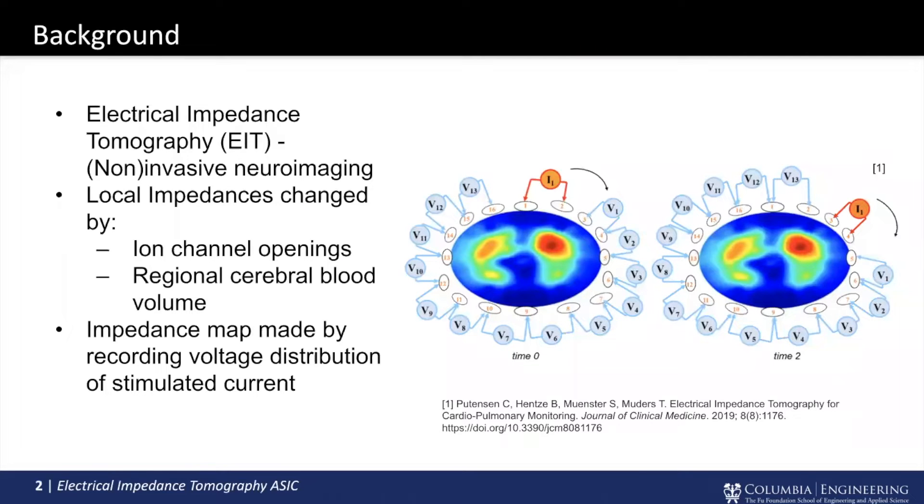So we made an electrical impedance tomography chip. EIT is a non-invasive or possibly invasive neuroimaging technique where you inject current through different electrodes placed around some structure, often neurons or some biological structure that you're trying to investigate. And then you record the resultant voltage distribution using the remaining electrodes. And by doing this for each different pair of electrodes, you can create a map of impedances within the material.